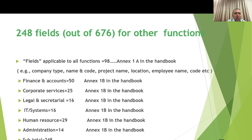There are 248 fields which are common and used by other functions also. For example, company type is one field; name of the company is one field; code of the company is one field; name of the project is one field; location where the construction project is situated is one field; employee name and code are fields. For other functions: finance records — 50 fields; corporate services — 25; legal and security — 16; IT systems — 16; human resources — 29; administration — 14. Total: 248 fields.